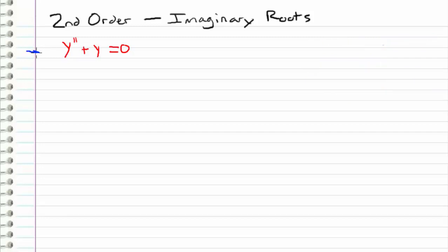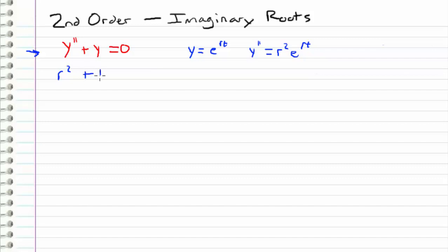Let's take a look at this example: y double prime plus y is equal to zero. Since it is a constant coefficient homogeneous differential equation, we know we need to assume y is of the form e to the r times t. If we differentiate this twice, we get r squared times e to the rt. Plugging that back in and factoring out e to the rt, we get r squared plus one times e to the rt equals zero. We can eliminate e to the rt since it never equals zero.